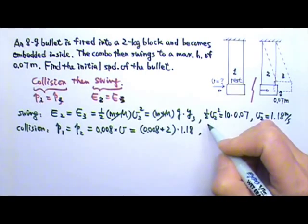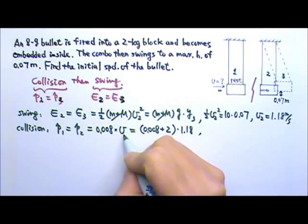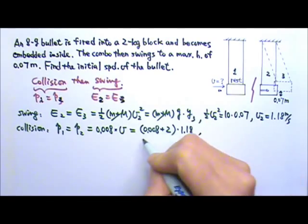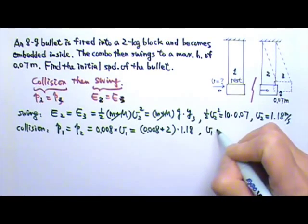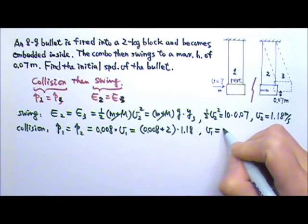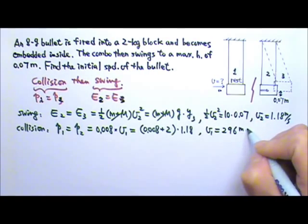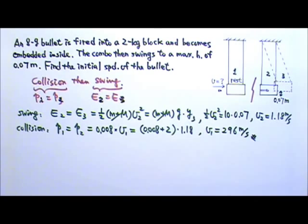So if we do this calculation, we'll find this velocity at the very beginning. We can call it V1 if we want to. This V1 would be 296 meters per second. And that's the speed of the bullet.